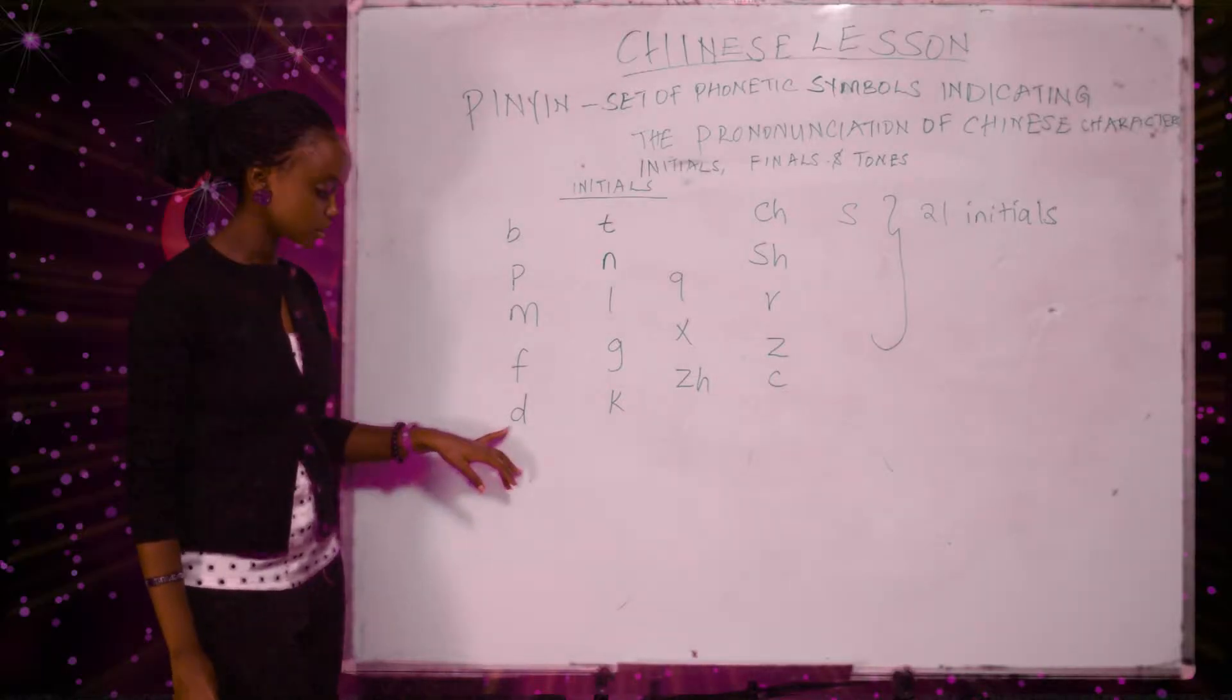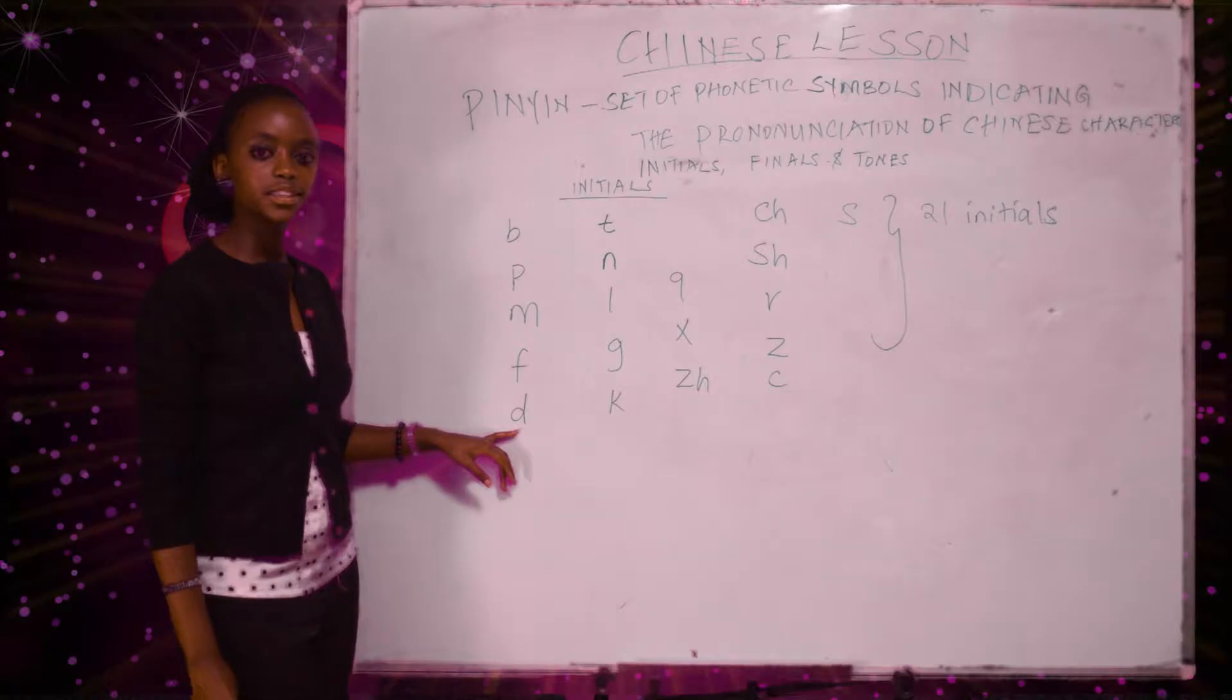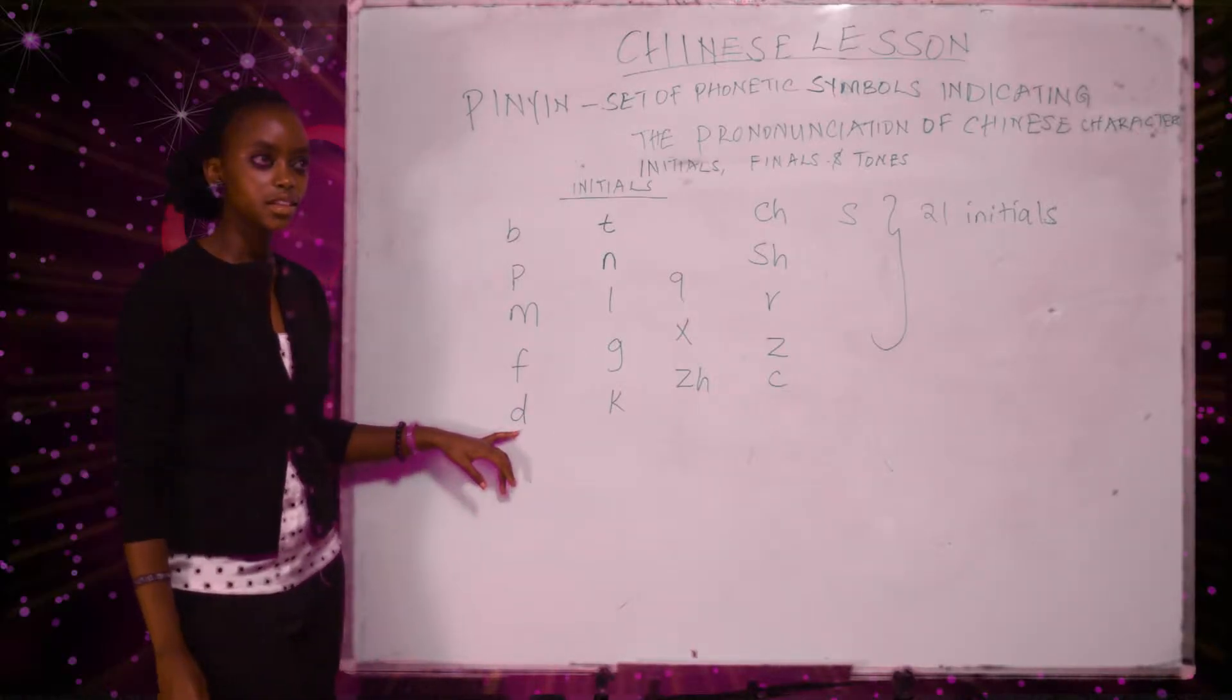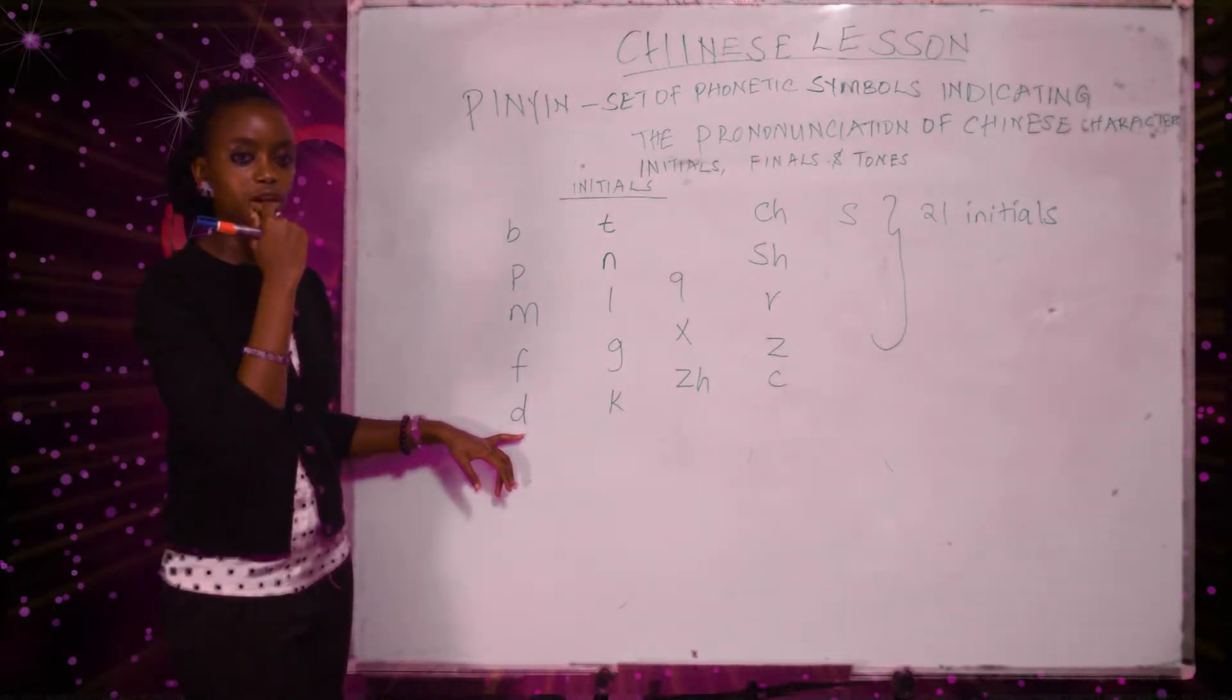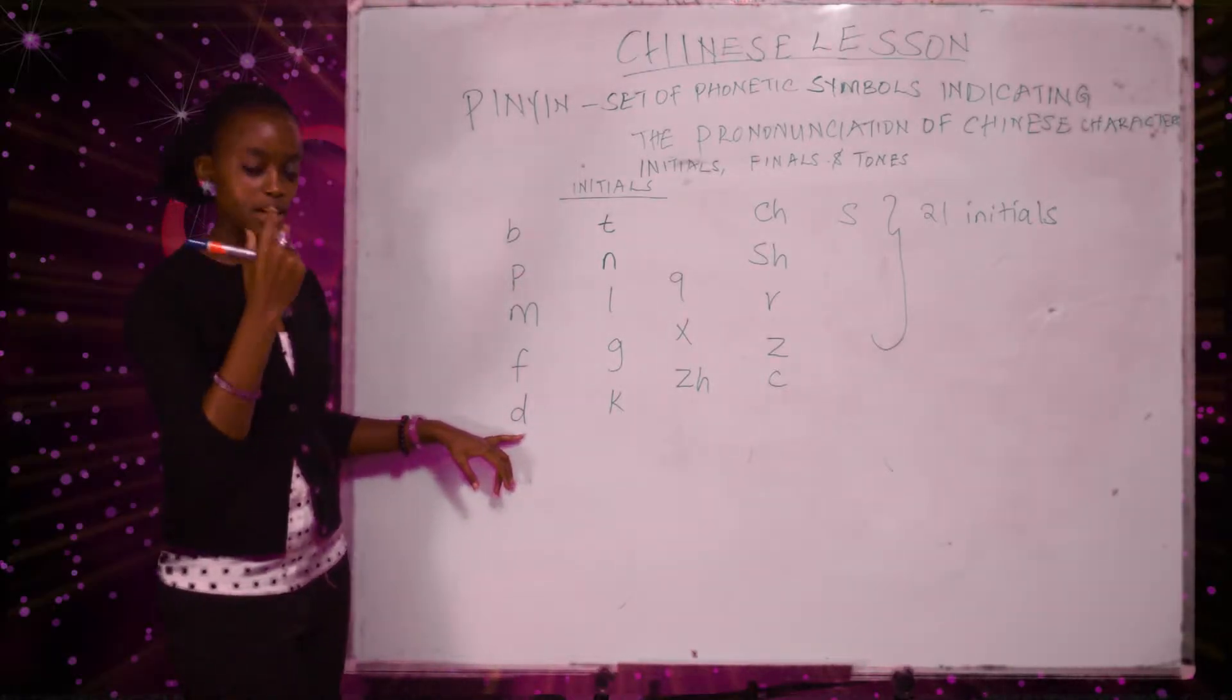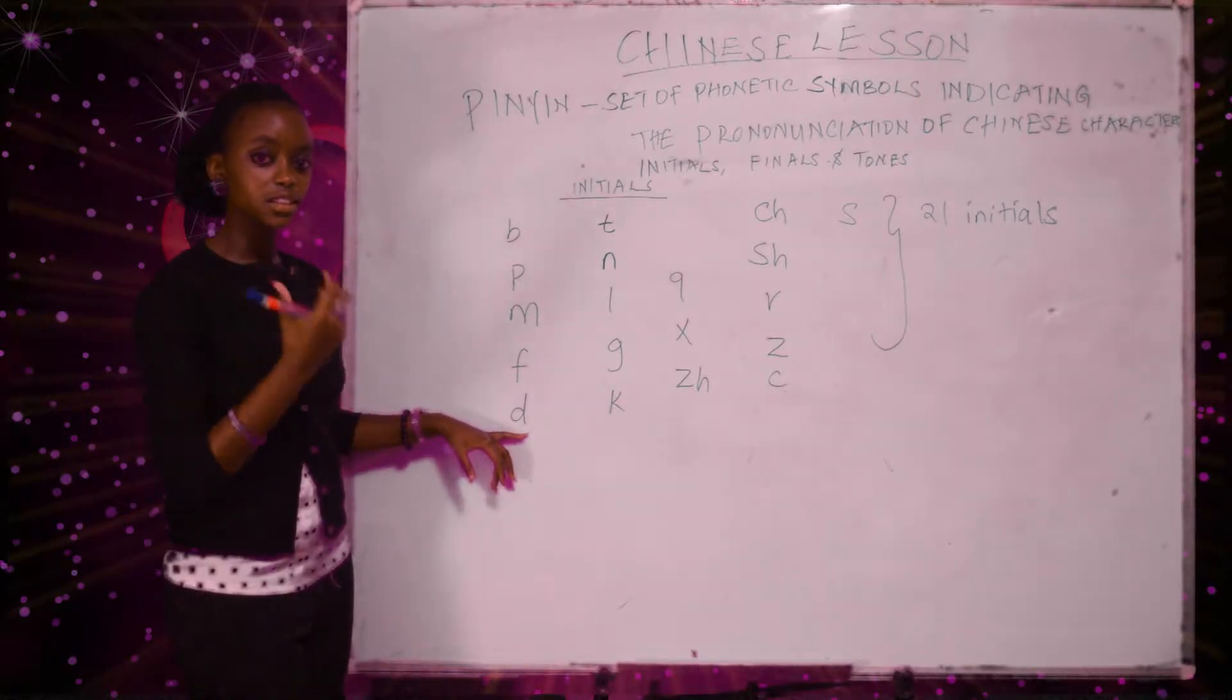The next one is the D. You pronounce it as dhu, dhu. As you pronounce D your tongue has to touch your upper gum, so as to pronounce the word dhu, dhu.